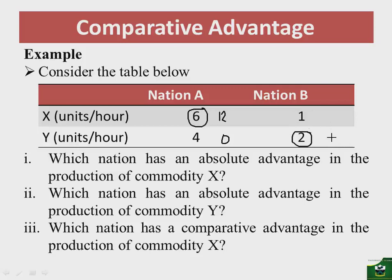With this arrangement, there will be zero units of commodity X produced in nation B. Because nation A is exchanging six units of X for six units of Y, we subtract the six units being exported, leaving six units of X remaining in nation A after the trade.